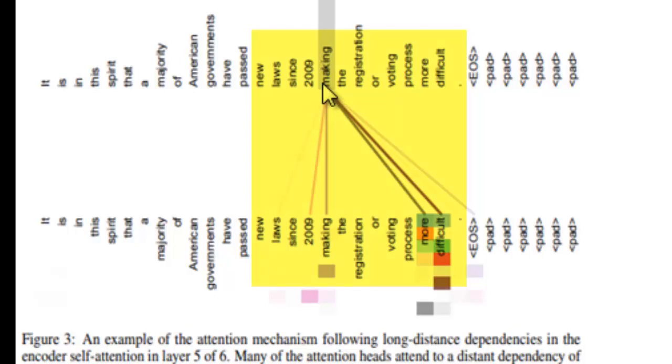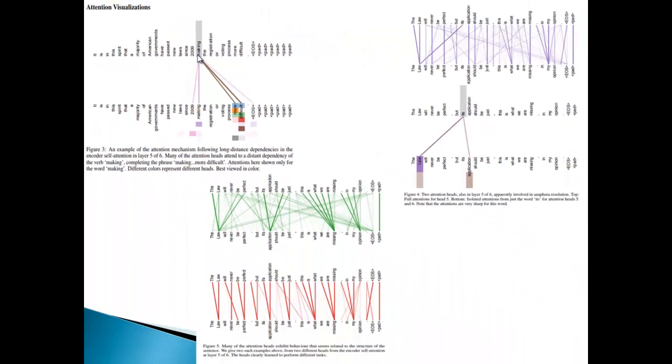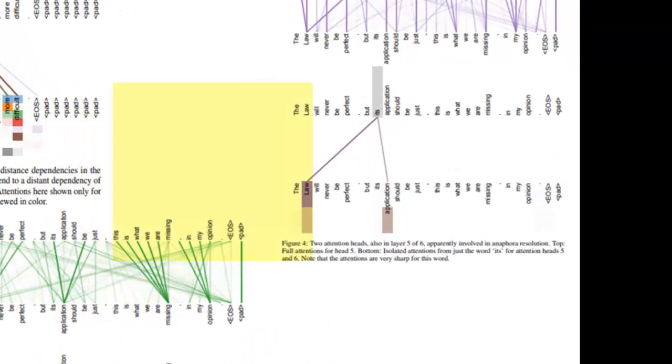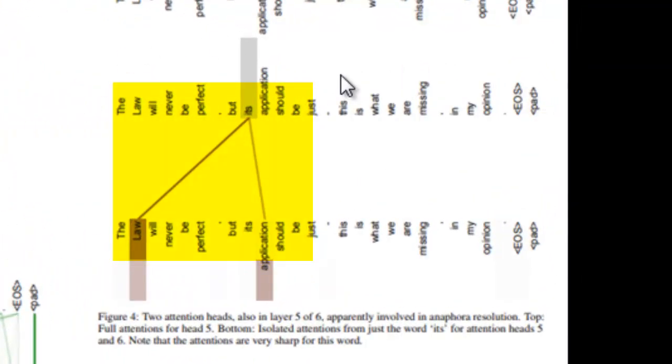One side there's query words and the other side is token words, and the snippets are taken from different layers showing how they're getting generated. For example, in the first one, you can see how the word 'making' is getting associated towards 'more' and 'difficult.' Making more, making difficult. This kind of sentence is trying to correlate. That is one layer of attention trying to do.